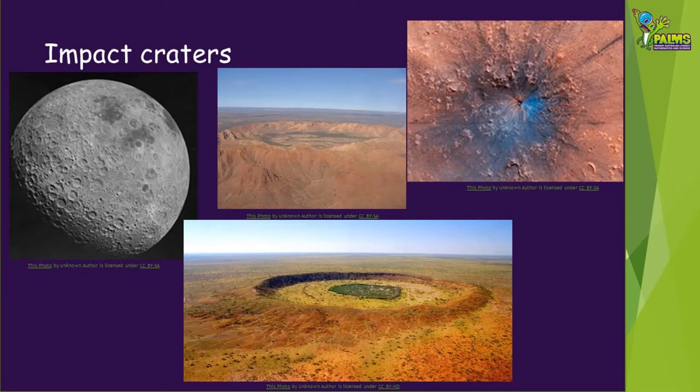These objects are called impactors and they are usually meteorites. The Moon is covered with impact craters as its very thin atmosphere offers little protection for the surface. The Earth has been bombarded by meteorites for millions of years and it still occurs today. It's often hard to see impact craters due to surface changes caused by weathering and erosion over long periods of time, or they may even be underwater.